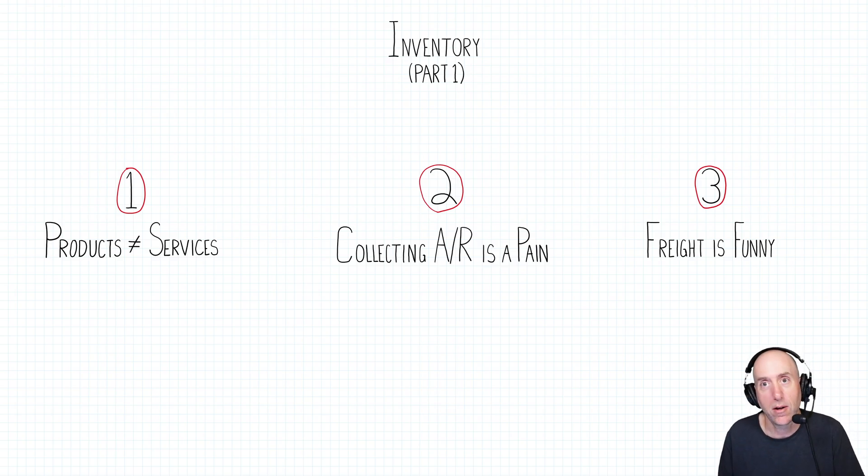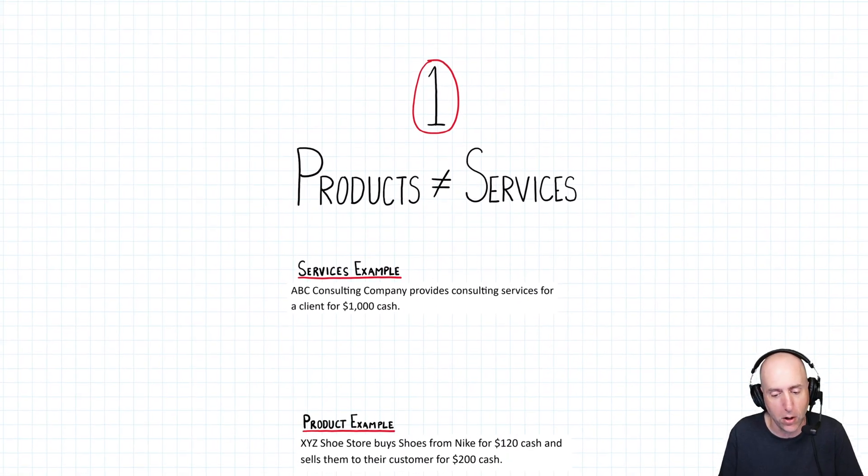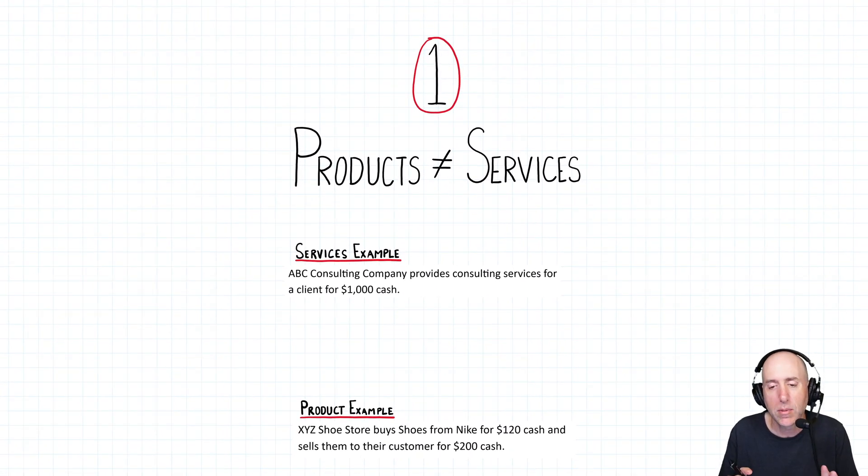The first thing is products versus services. Products are different from services and a little bit more complicated. There's a reason we left this until module six. The second thing we'll talk about is accounts receivable. Actually, the topic we talked about last chapter and how collecting AR is a pain and one solution to that pain, which creates accounting challenges. The final thing we'll talk about is freight. When you sell a service, you're not shipping anything. Well, with inventory, shipping starts to become an issue.